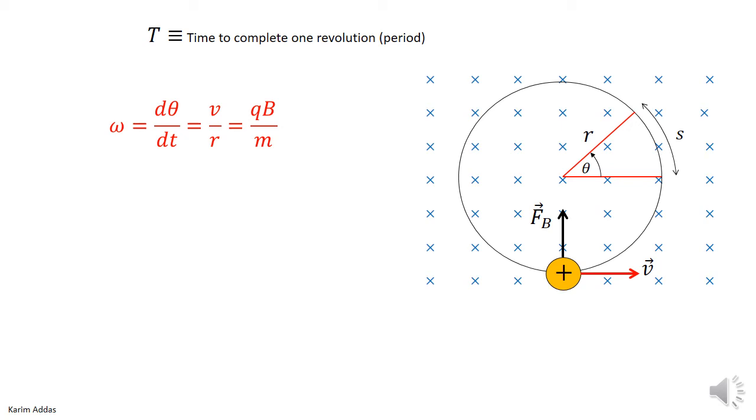We can then get the period of revolution, which is the time it takes for the charged particle to go around one complete revolution. We showed in the previous video that omega is dθ/dt, which turned out to be v/r and qB/m. This is what the angular speed is.